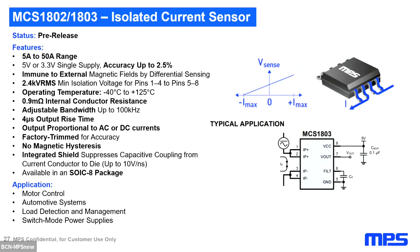The specifications: we can cover up to 15 amps range. We have both 5V and 3.3V single supply options. There is a 0.9mΩ internal conductive resistance and a bandwidth of 100 kHz, which is especially important for motor or other applications. We are also able to withstand magnetic hysteresis due to differential magnetic field measurement. The package used is SOC-8.